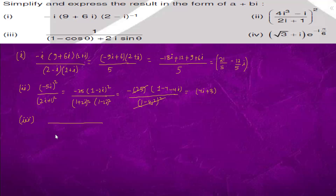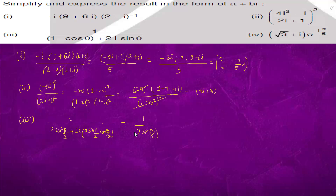So we have 1 upon 2 sine squared theta by 2, plus 2 sine theta, which can be written as 2 sine theta by 2 times cos theta by 2. If we take 2 sine theta by 2 common, we have 2 sine theta by 2 times the quantity sine theta by 2 plus iota times 2 cos theta by 2.